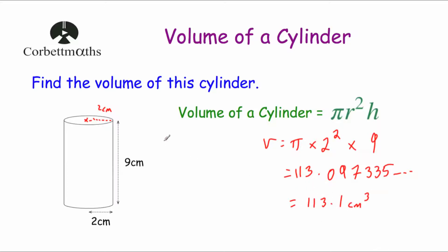So some students prefer to find the area of the cross section — doing pi r squared — and then multiply by the height or length of the cylinder. And some students prefer to learn the formula, volume equals pi r squared h, and substitute in the radius and the height. Whichever approach you prefer works fine.